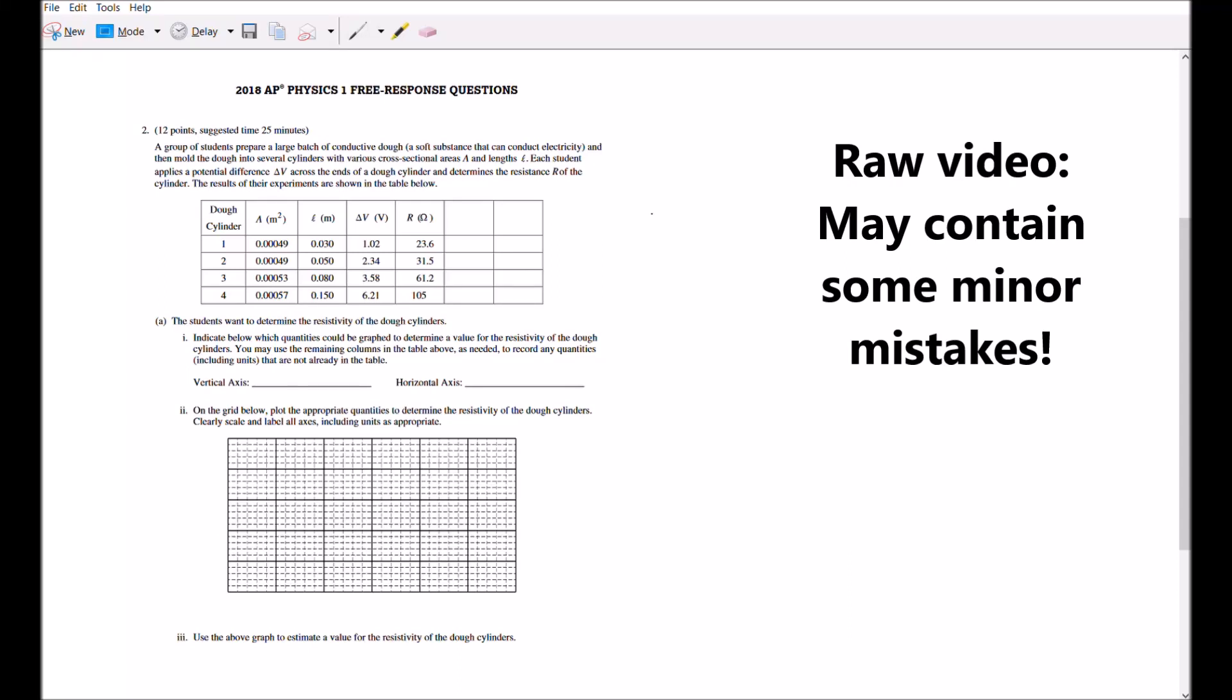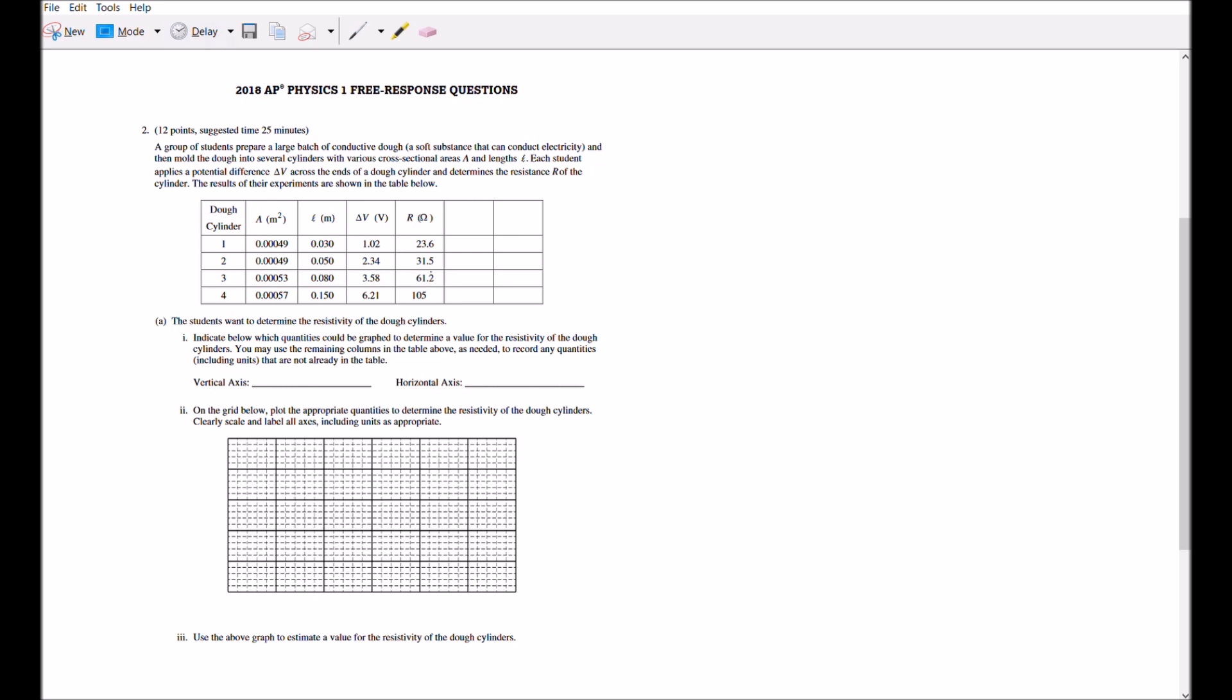Hello everyone, in this question students are investigating a material for the resistivity. Let's recall the resistance equation: R equals rho (resistivity) times length over cross-sectional area. To find resistivity, you need to divide resistance by L over A. With the given information—cross-sectional area, length, and resistance—we can proceed.